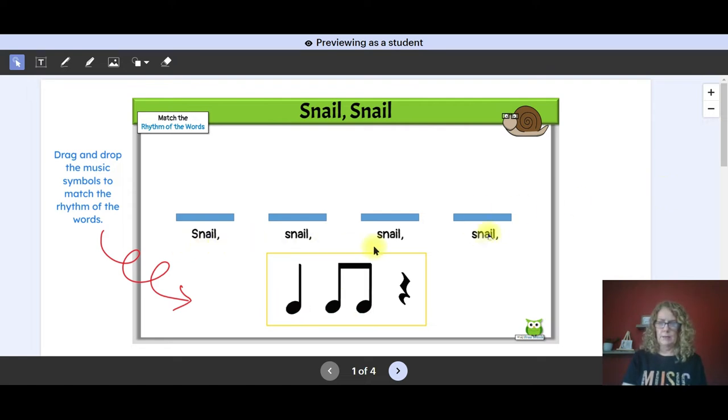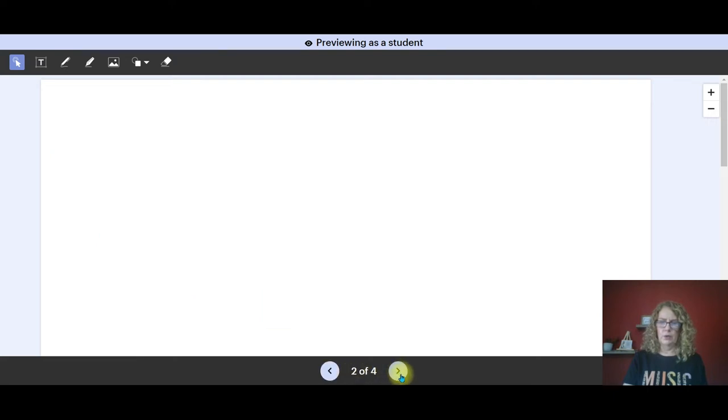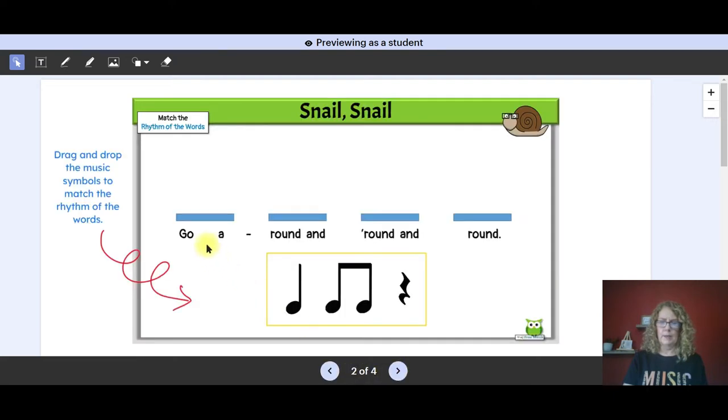Here you see the lyrics and the students already know the song because they have learned it and sung it in class. So they are going to drag and drop the music elements to match the rhythm. There are four pages in this activity. We're on page one so we're going to click to go to page two and once again we're going to match the rhythm.